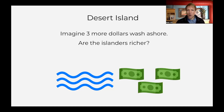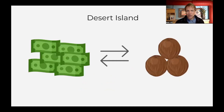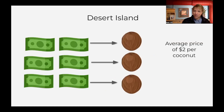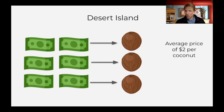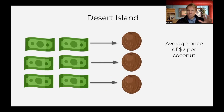If three more dollars wash up on the shore, now we've got $6 but still only three coconuts. We're going to trade the $6 for the three coconuts, so the price of a coconut will have gone up to $2. We're not richer — we don't have any more coconuts, we're not eating more coconuts. We have the same amount of coconuts; the only difference is the price level has increased. This again is inflation: if we add money, prices go up, but we don't get richer.